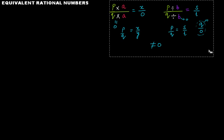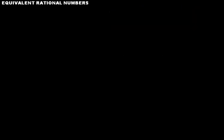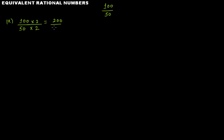Let's say our rational number is 100 over 50. If I multiply 100 over 50 by 2, I get 200 over 100. Therefore we say that 100 over 50 and 200 over 100 are equivalent rational numbers, and they are equal.